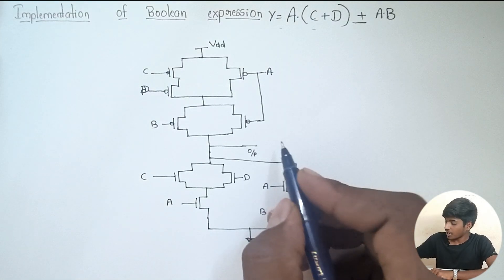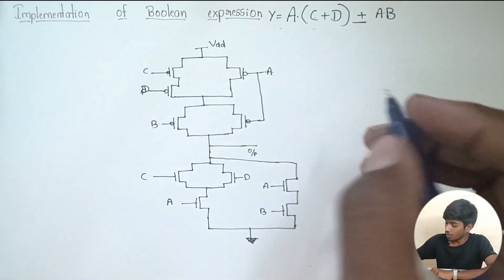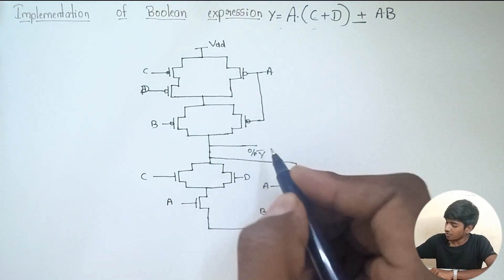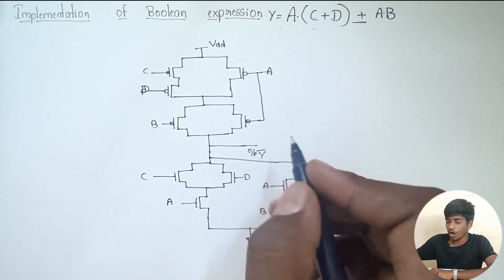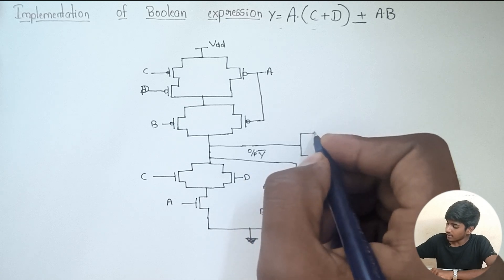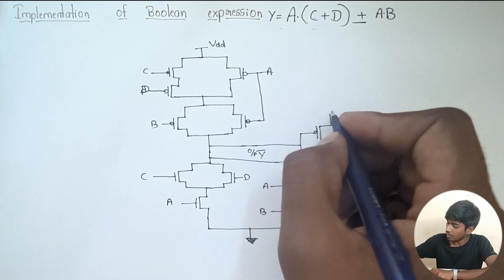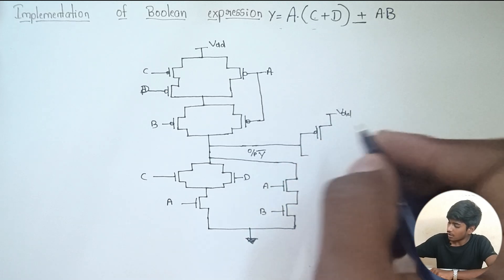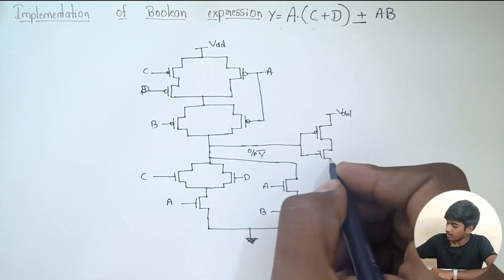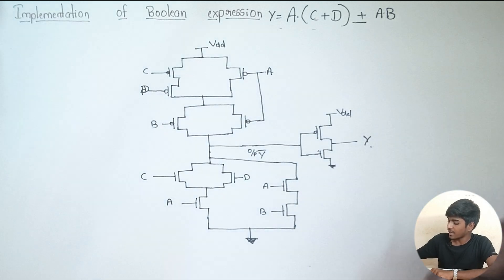The output here is complemented — we get Y bar. To remove that complement, we should connect an inverter circuit. So the inverter circuit is connected as well known. This is ground and here we will be getting Y.